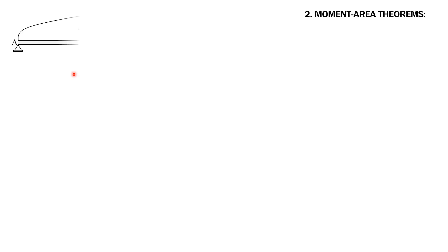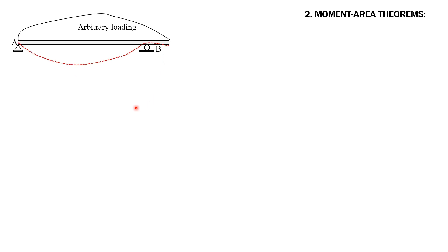Let's have the derivation of the area moment theorems. First, let's consider the beam and draw the elastic curve, considering two points on the elastic curve, namely point C and point D. Then from these points we draw tangent lines. We consider a differential element of length differential S on the elastic curve, and the horizontal projection of this DS is denoted by DX.